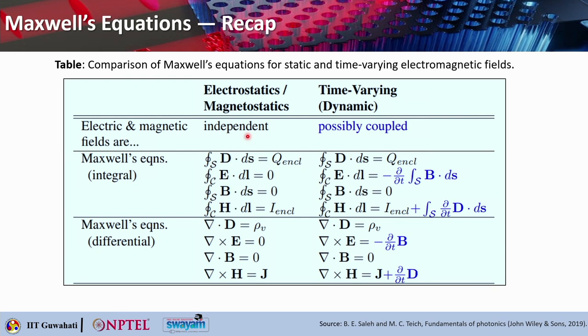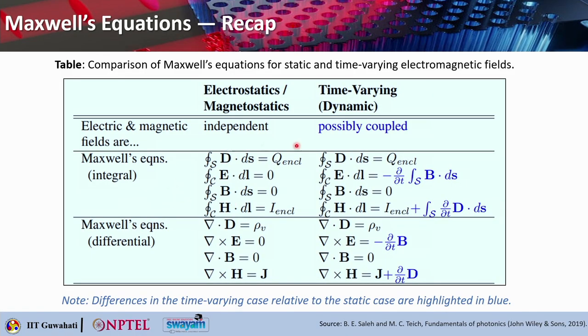In the last lecture, we saw that Maxwell's equations can be written in terms of static and dynamic fields, where E and H fields are independent in static conditions such as electrostatics or magnetostatics. The electric and magnetic fields are coupled when we talk about electrodynamics, which describes time-varying fields. These are Maxwell's equations in integral form for electrostatics or magnetostatics, and this is for electrodynamics, with the blue terms being the additions in the time-varying or dynamic case.